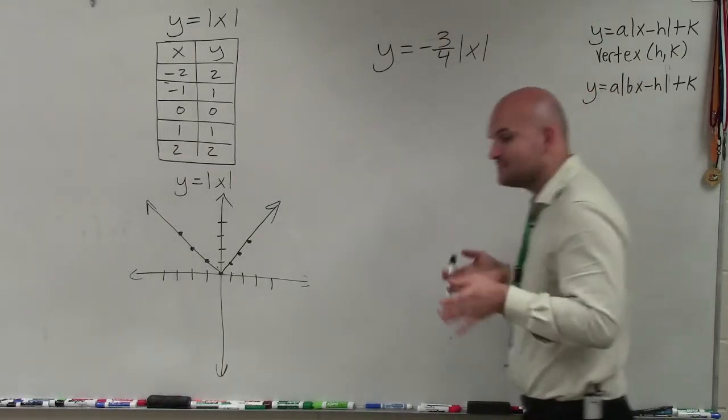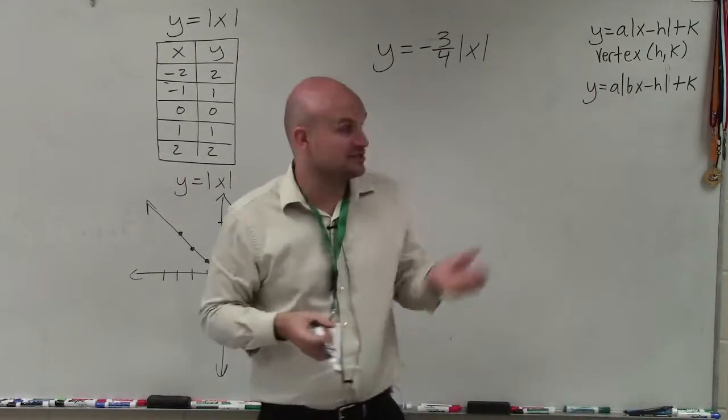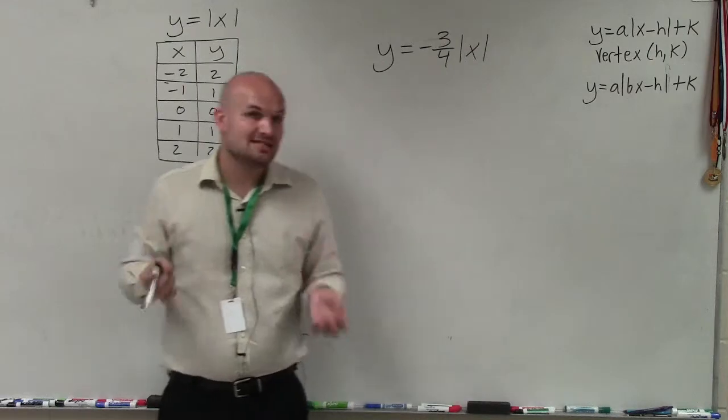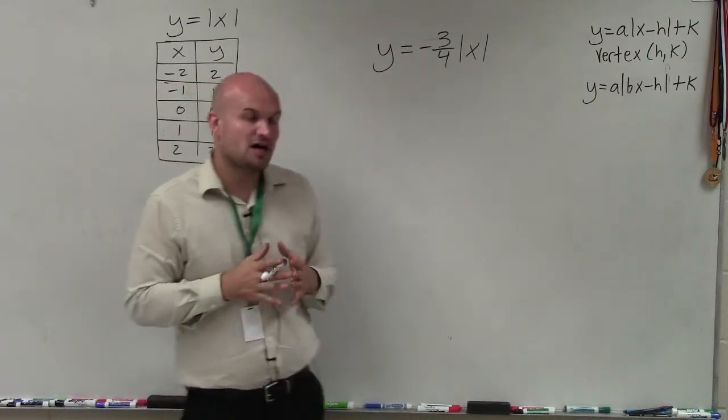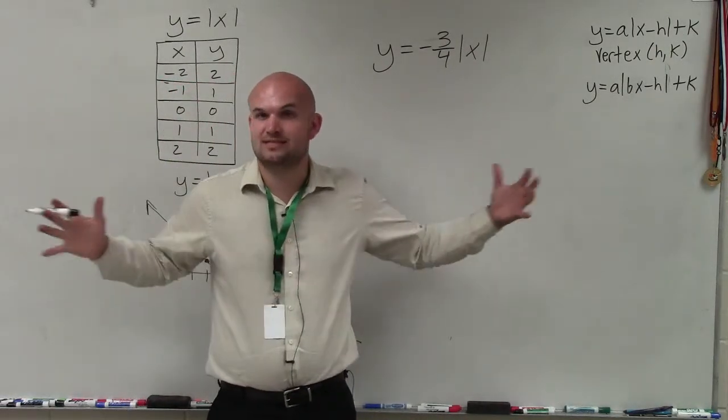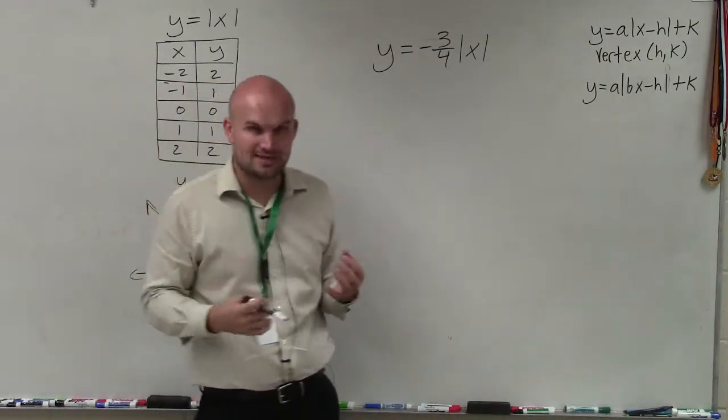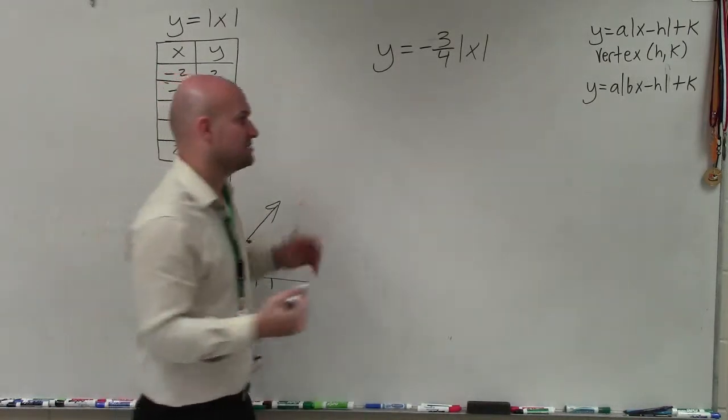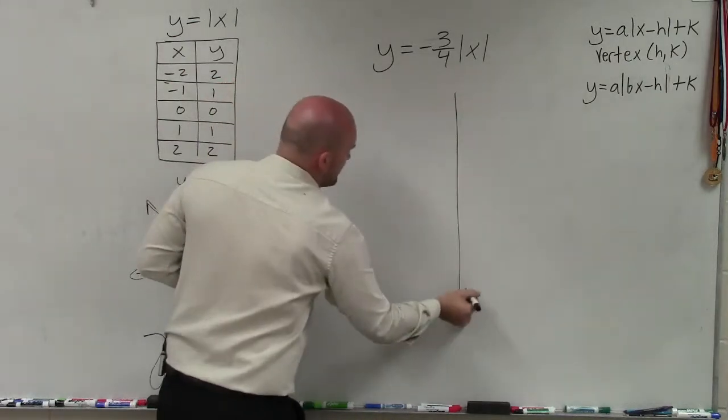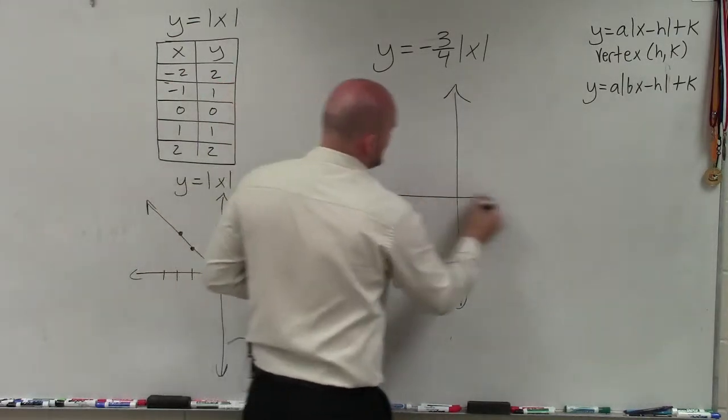And then also, since the absolute value of my a, this three-fourths, is less than 1, that's going to tell me that my graph is going to be horizontally stretched. To identify how it's horizontally stretched, we can use a table of values. So we know our vertex is still going to be at 0, 0.